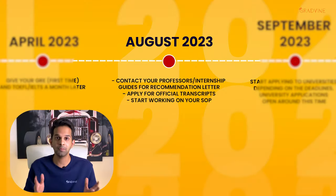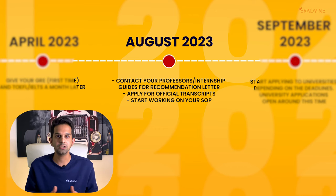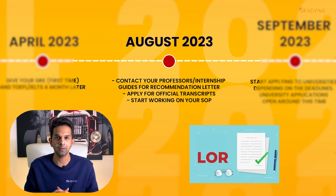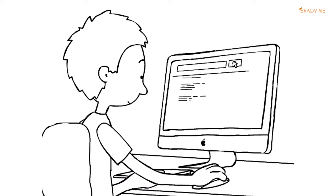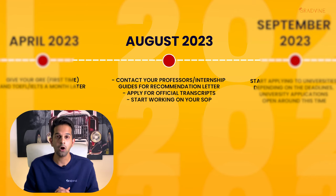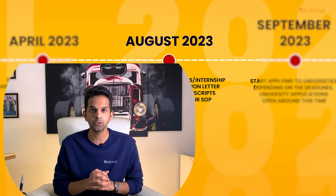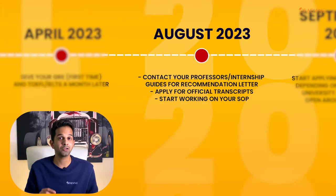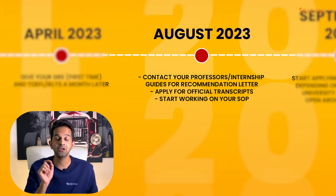Now your tests are done and you are set to work on your documents. You are in the month of August, and this is a crucial time because you have to address two elements of the application that almost always get delayed. In August, reach out to your professors and get their approval for recommendation letters, and inform them about how many universities you might apply to so they are ready to upload LORs that many times. August is also a good time to get in touch with your academic cell to get your transcripts — get individual transcripts, as they will need to be uploaded in your application and the college might delay.